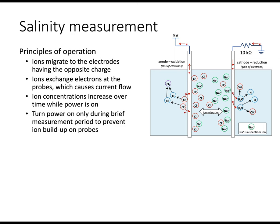So this is actually a voltage divider here. We are not showing the Arduino connections. Basically, this works by having ions that exchange electrons with the probes. The ions migrate to the probe of opposite charge. They exchange electrons. The ion concentrations do increase over time when the power is on. So because of that, we want to turn the probe on only for limited amounts of time when we're making the readings and then turn it off again.